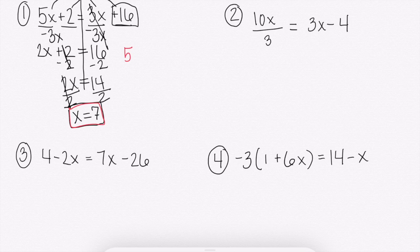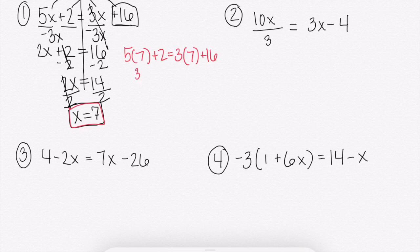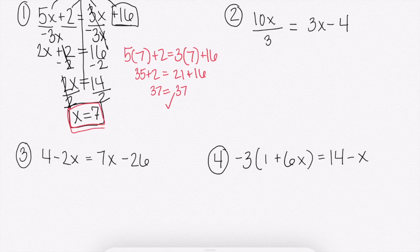So 5 instead of x, 7. Instead of x, 7. And we're going to go ahead and solve this out. So 5 times 7 is 35. 3 times 7 is 21 plus 16. 37. 37. It does work out. So we know x equals 7 is the correct answer.